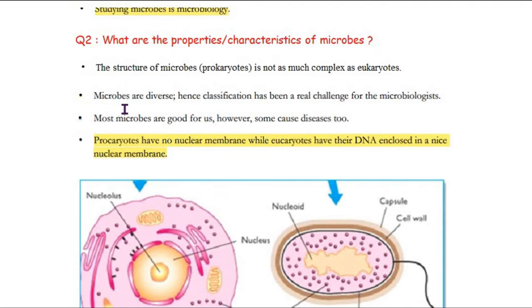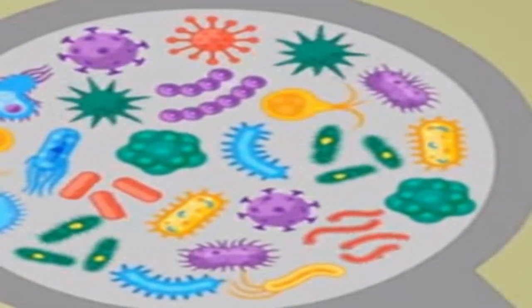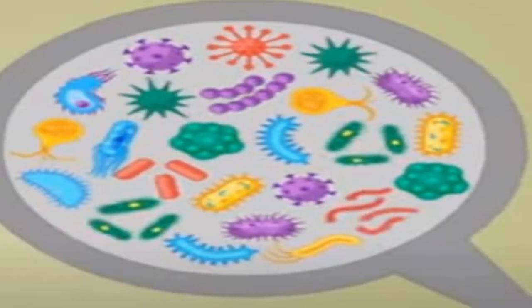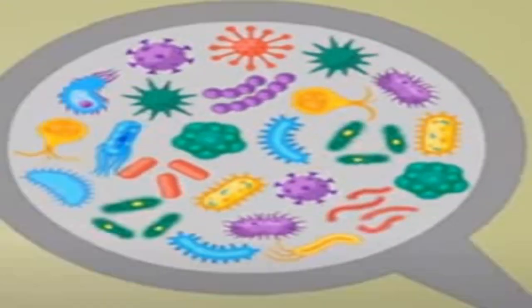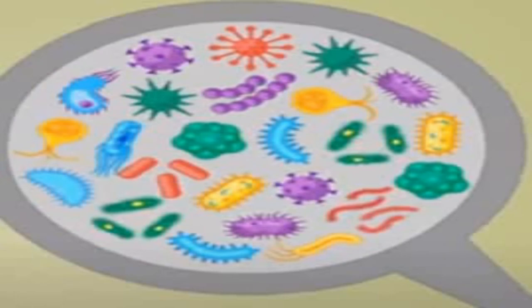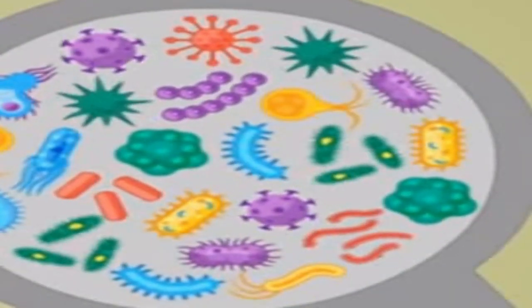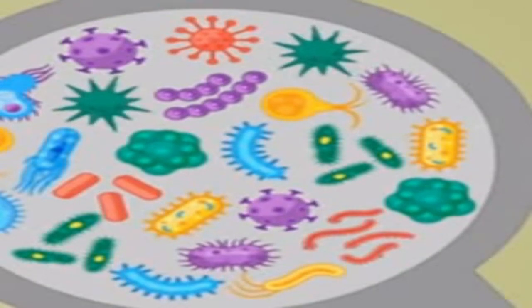The second characteristic is that they are diverse. The microorganism system is not as complex as eukaryotes, but the diversity is a lot — there are so many different microbes that they are very difficult to classify. Microbiologists find it very difficult to classify each microorganism, as each one is unique in its characteristics.